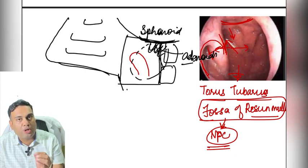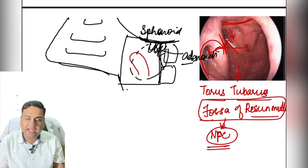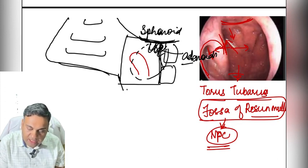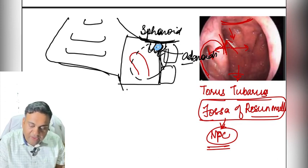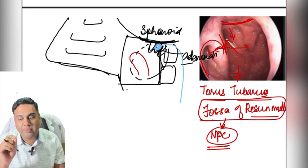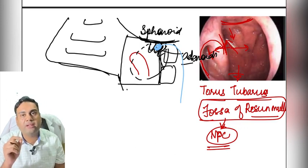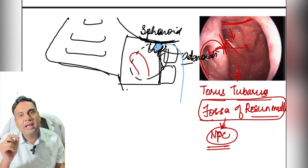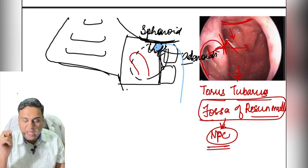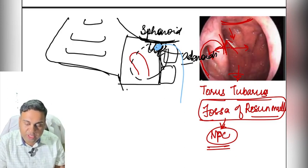Behind the nasopharynx is the vertebra, where the spinal cord and notochord developed in intrauterine life. The point where the notochord begins is associated with Rathke's pouch, and sometimes a cyst called a Thornwaldt cyst can develop here.